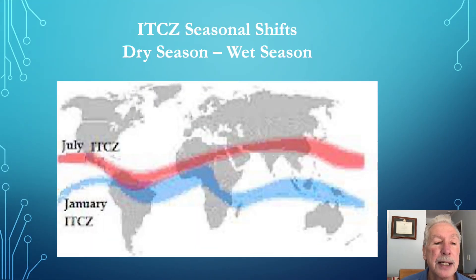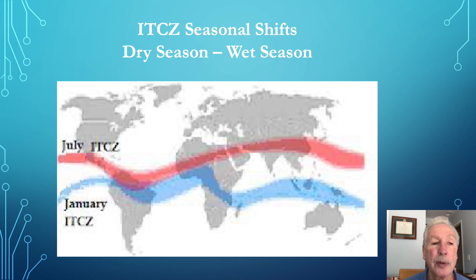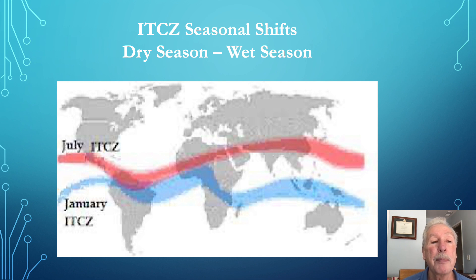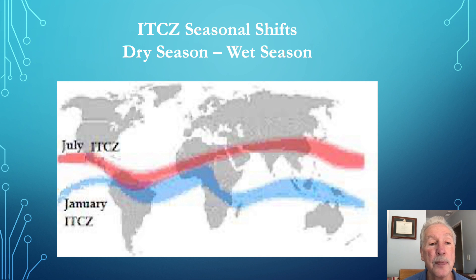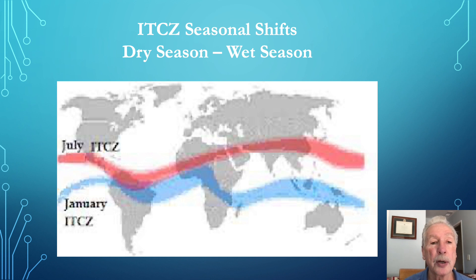The ITCZ will shift with the Sun, moving north during the Northern Hemisphere summer and then south in the Southern Hemisphere. It's also affected by continents that heat up faster than the ocean and by changing ocean currents that might cause warming and cooling of the ocean surface.